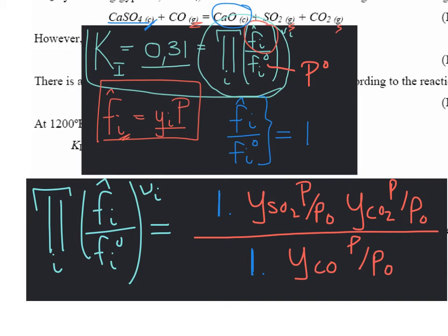If we now apply that, we can substitute in this expression for calcium oxide, a 1 for that ratio. Then for each of the ideal gases, it's the partial pressure divided by the standard state pressure for the products.